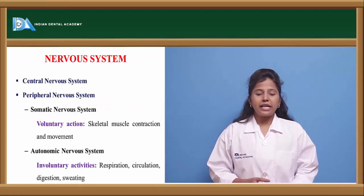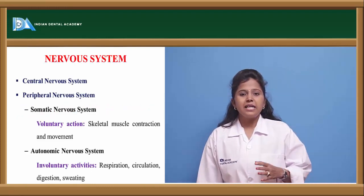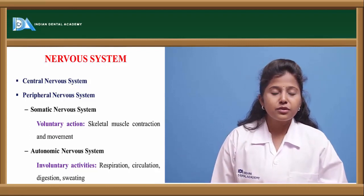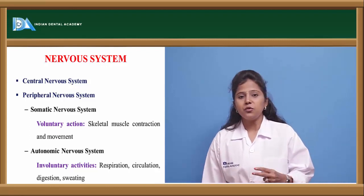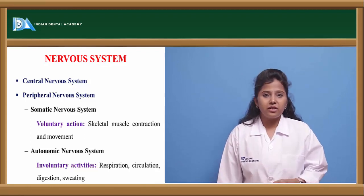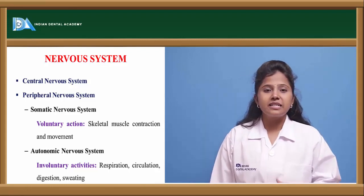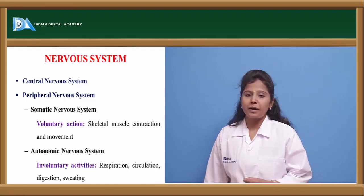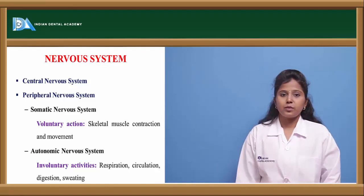Before entering into the actual topic of sympathomimetics, let us see a brief outline of the nervous system. The nervous system is divided into two parts: the central nervous system and the peripheral nervous system. The peripheral nervous system is further divided into two parts: the somatic nervous system and the autonomic nervous system.